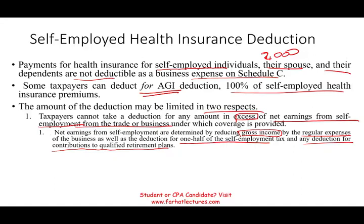For example, if you paid $50,000 in premiums — an exaggerated number — and your net earnings from self-employment are $30,000, you are limited to $30,000. That's the first limitation.